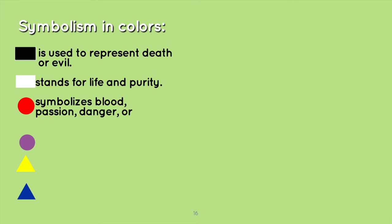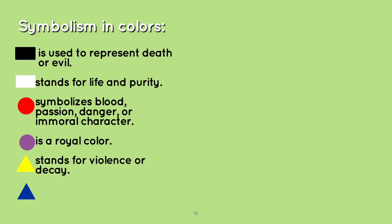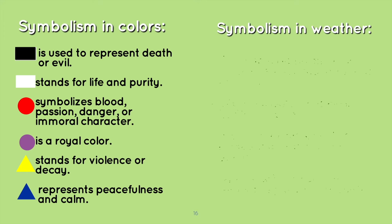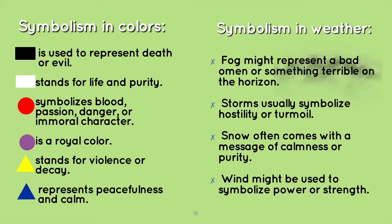Symbolism in colors: black is used to represent death or evil; white stands for life and purity; red symbolizes blood, passion, danger, or immoral character; purple is a royal color; yellow stands for violence or decay; and blue represents peacefulness and calm. Symbolism in weather: fog might represent a bad omen or something terrible on the horizon; storms usually symbolize hostility or turmoil; snow often comes with a message of calmness or purity; and wind might be used to symbolize power or strength.